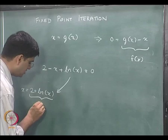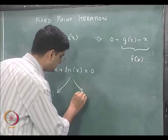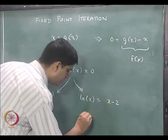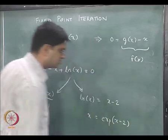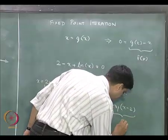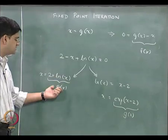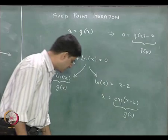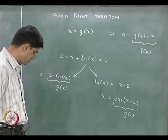One way we can write this is x equal to 2 plus ln x. Another way is to take ln of x equal to x minus 2, which gives x equal to e to the power x minus 2. So x equals 2 plus ln x is one way of writing this, and x equals e to the power x minus 2 is another way. There is nothing unique about which form we choose.